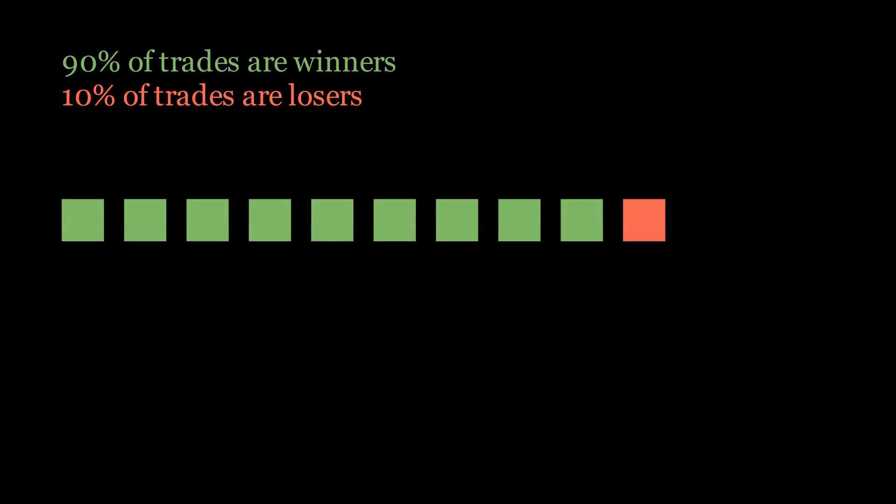Imagine a stock trader, 90% of his trades are good, and only 10% are bad. From the outside, it looks like he is a really profitable trader. But in reality, he is losing a lot of money, and isn't profitable at all. How is that possible?